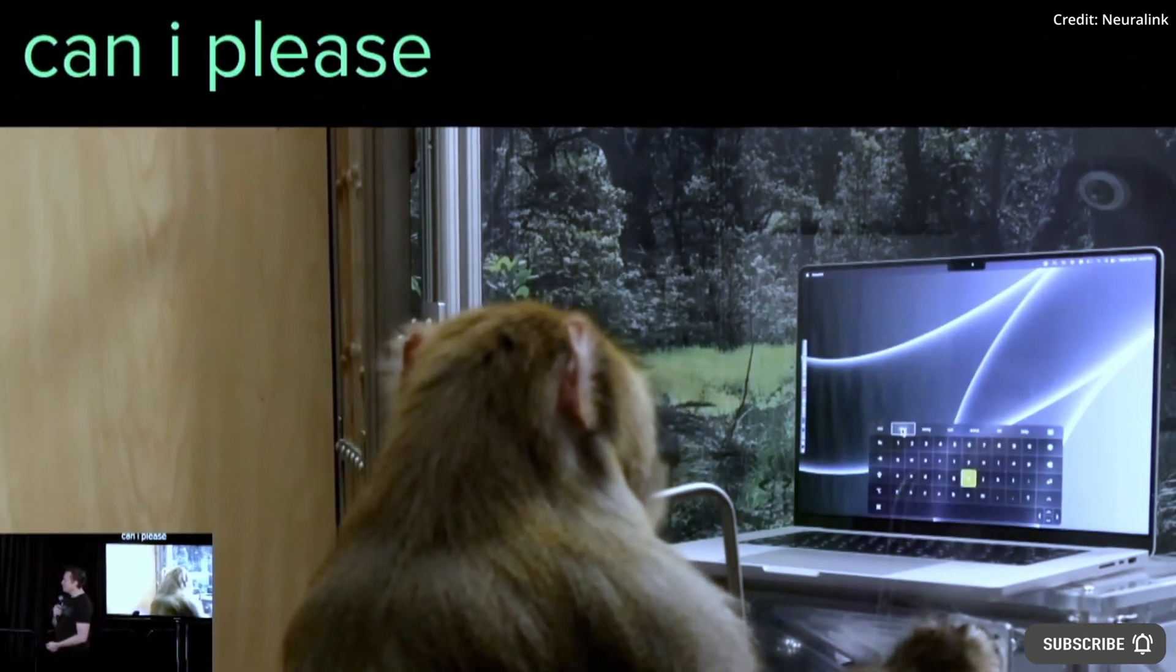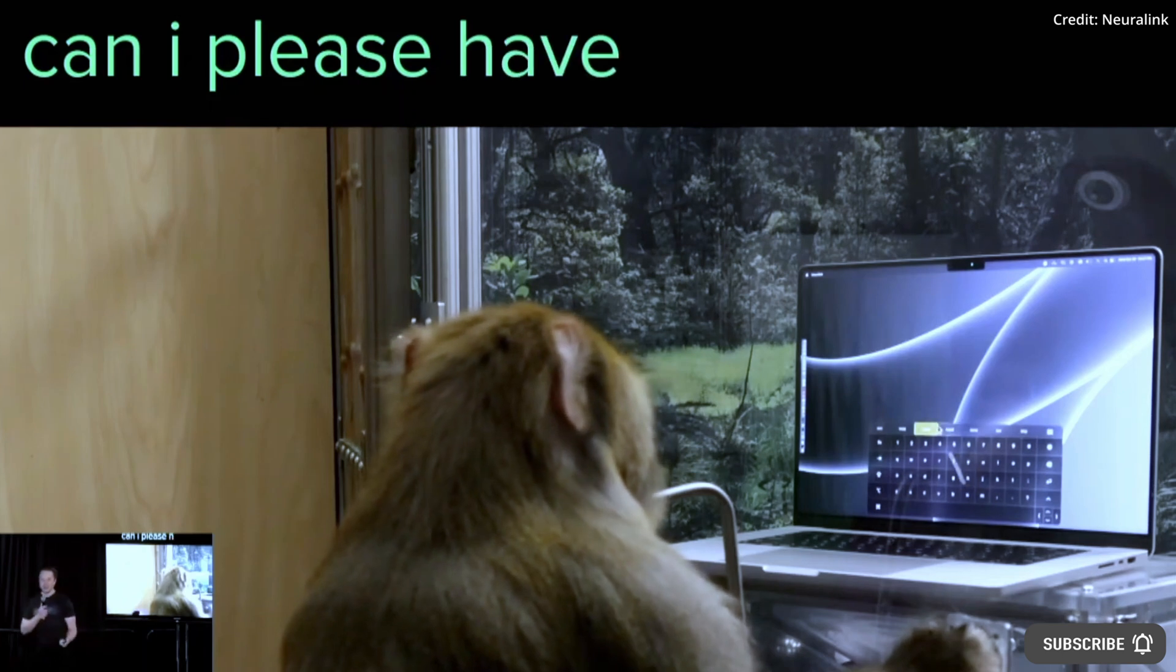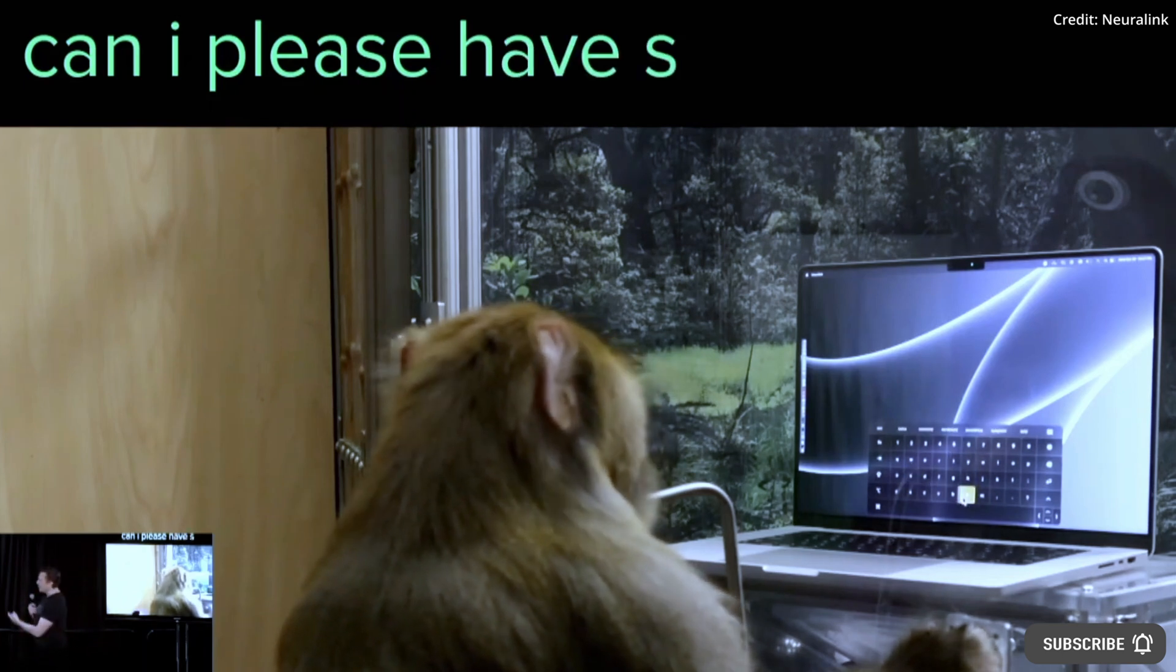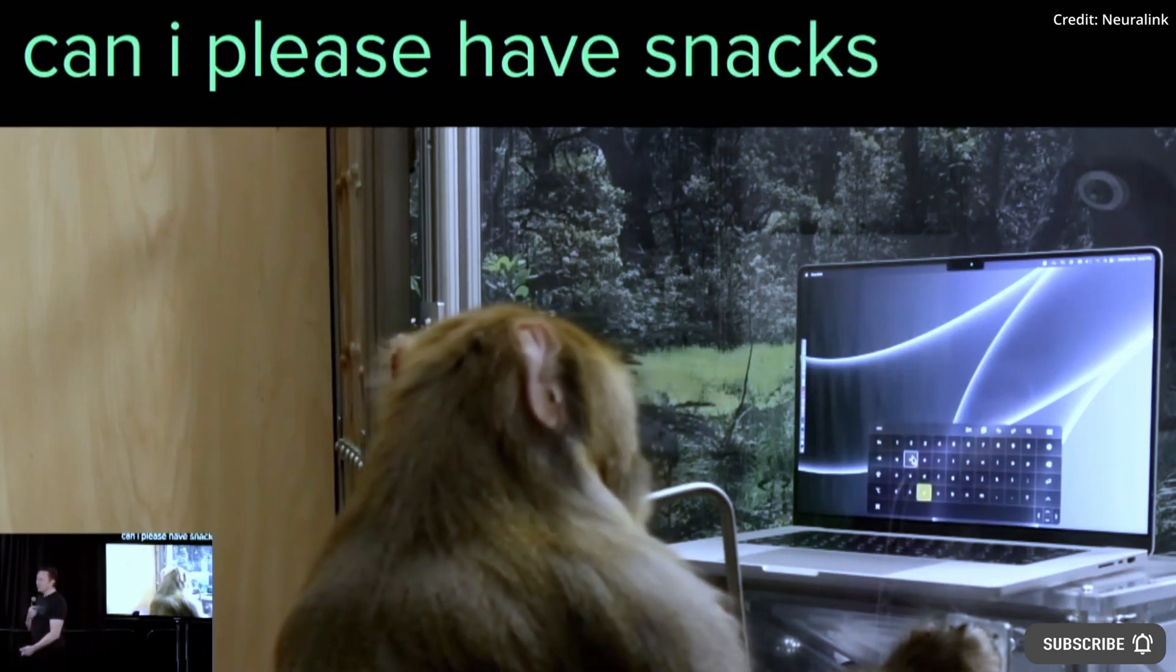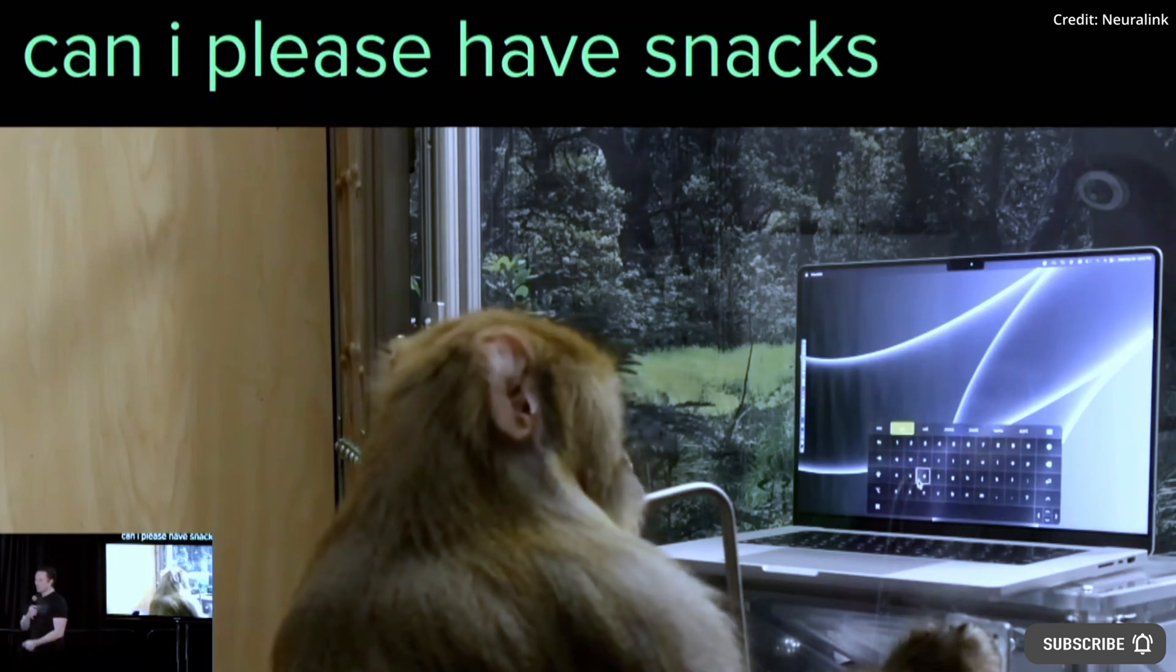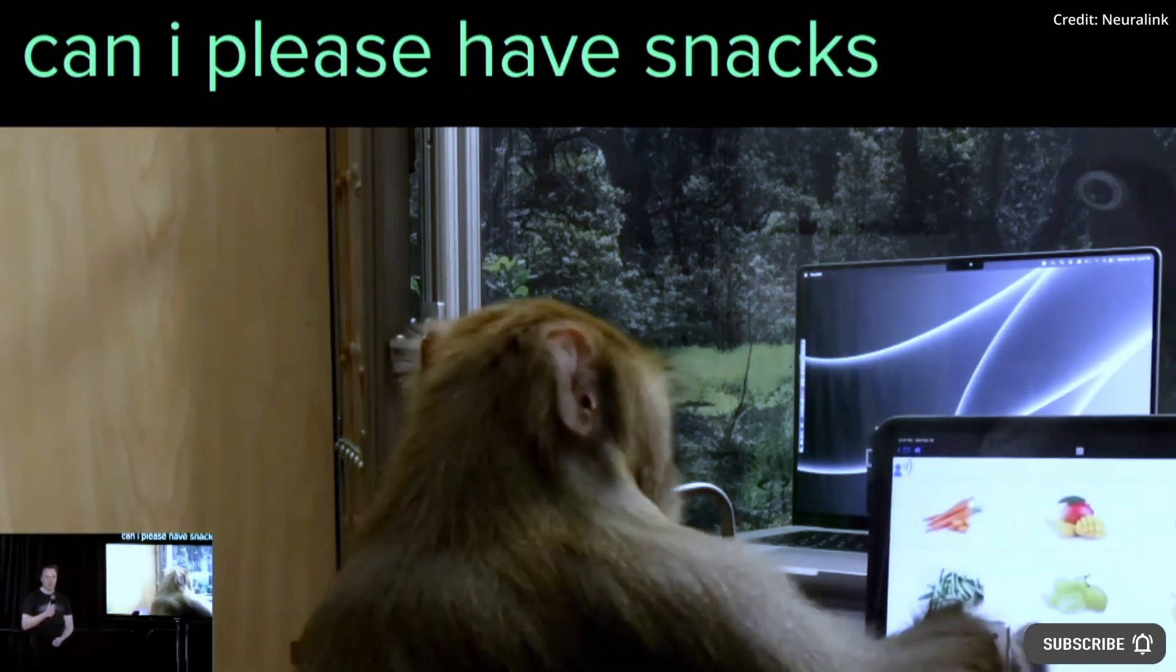Elon Musk said Neuralink has submitted all of the required documentation to the FDA in order to start human trials and therefore estimated that the N1 Neuralink device would see its first implant in the human brain within five to six months.